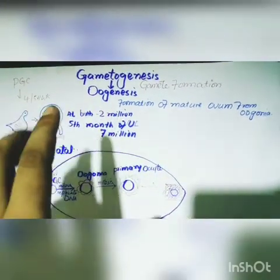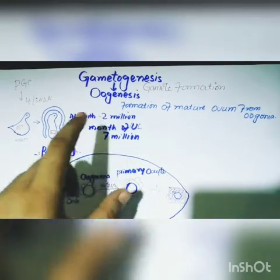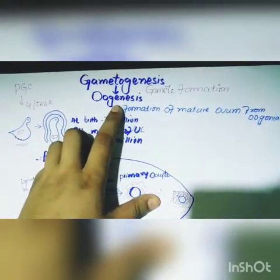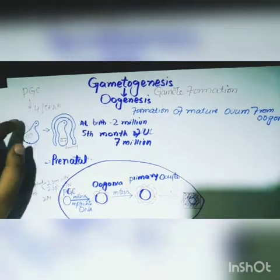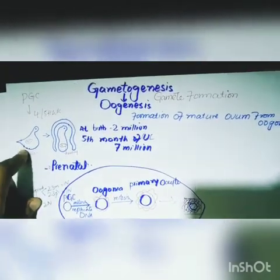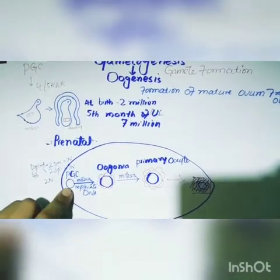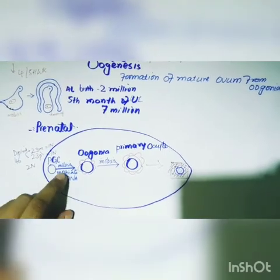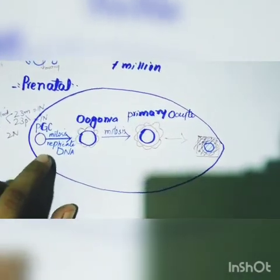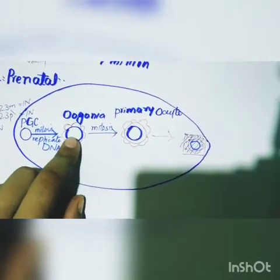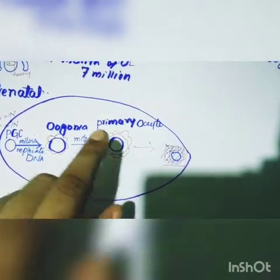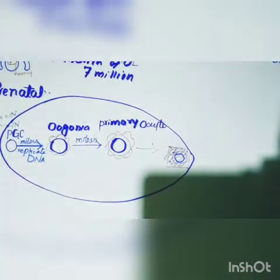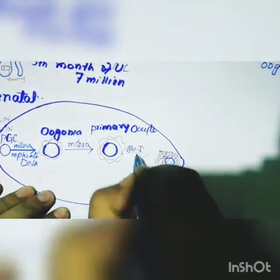Gametogenesis is the process by which gamete formation occurs. Oogenesis is the formation of mature ovum from oogonia. First, the primordial germ cell appears around the fourth or fifth week in the yolk sac, then migrates to the ovary. In the ovary, the primordial germ cell undergoes mitosis, replicates its DNA, and forms oogonia. Oogonia again undergo mitosis and form primary oocytes, which start meiosis 1 and get arrested at prophase stage 1.